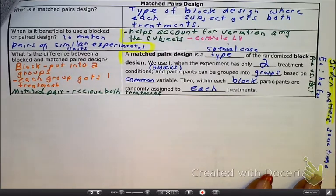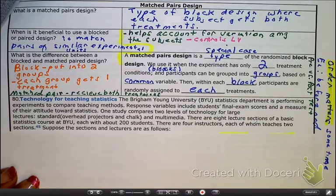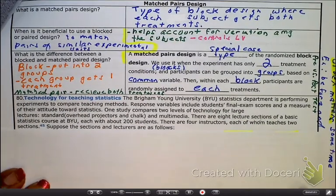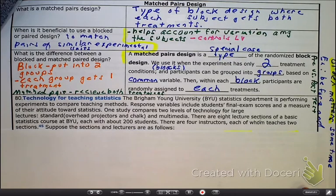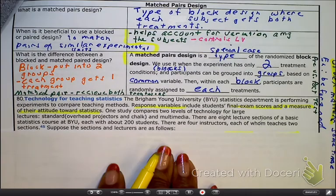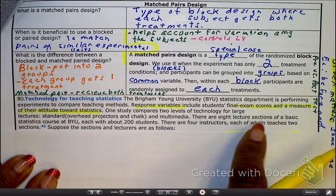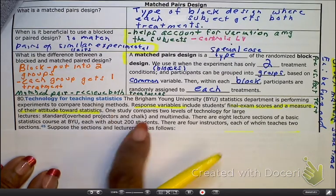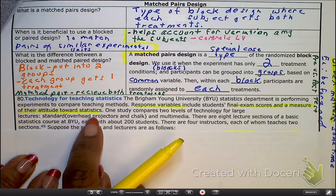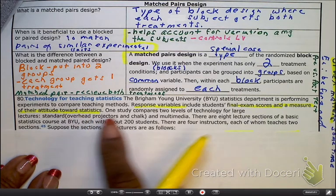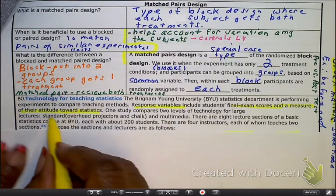So now I want to go to our question, question 80. Please go ahead and read that. Okay, so here we've got a statistics department comparing teaching methods. The response variable is the final exam score and students' attitude towards statistics.